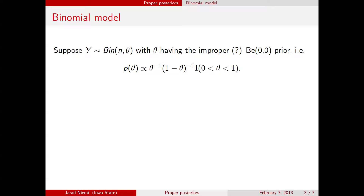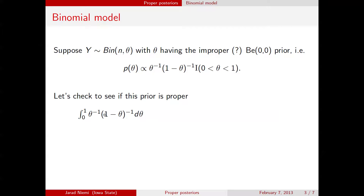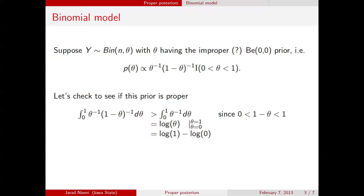The first thing we're going to do is show that this prior is in fact improper. We can see this is improper by finding its integral. Note that one minus theta is less than one, but the inverse of that is therefore greater than one. So this integral is greater than the integral we can do directly. That integral is the log of theta evaluated at theta equals one and zero, and the log of zero is negative infinity. So this integral is infinite, and therefore this prior is in fact improper.